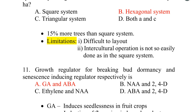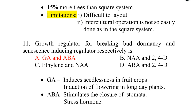Eleventh one. The growth regulator for breaking bud dormancy is gibberellic acid (GA), and the senescence-inducing regulator is abscisic acid (ABA). Gibberellic acid also induces seedlessness in fruit crops and is used for induction of flowering in long-day plants. Abscisic acid stimulates the closure of stomata and acts as a stress hormone.